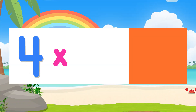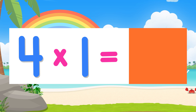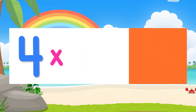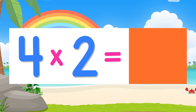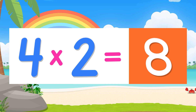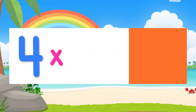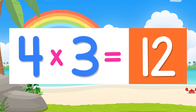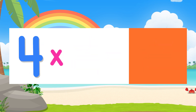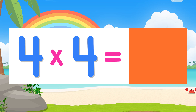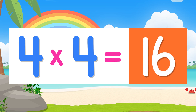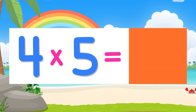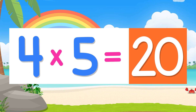Four times one is four. Four times two is eight. Four times three is twelve. Four times four is sixteen. Four times five is twenty.